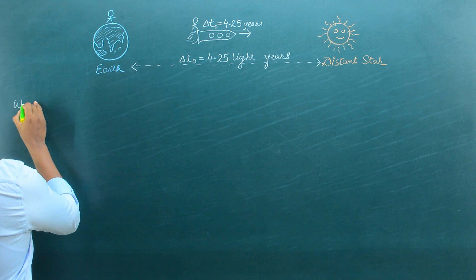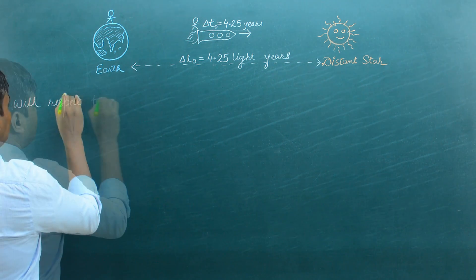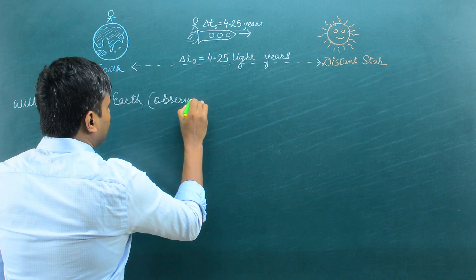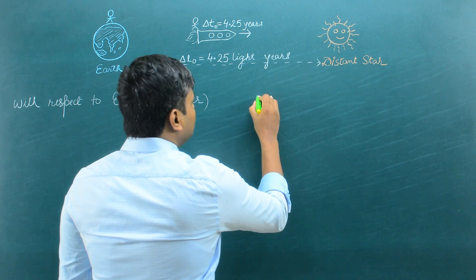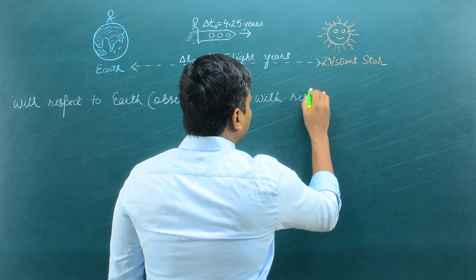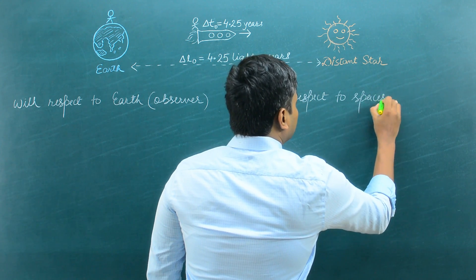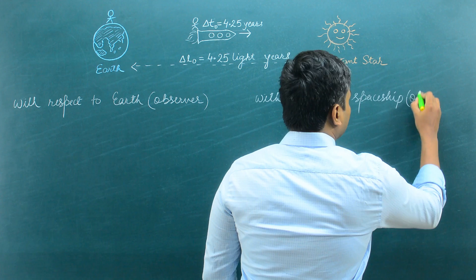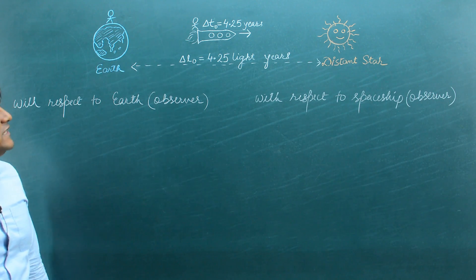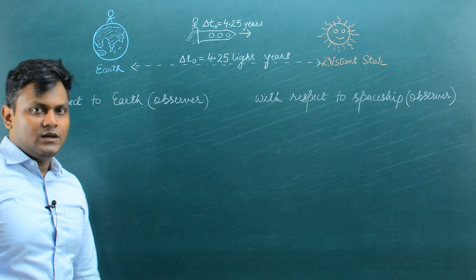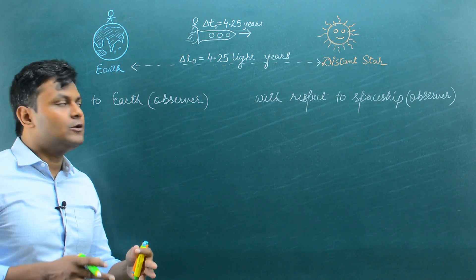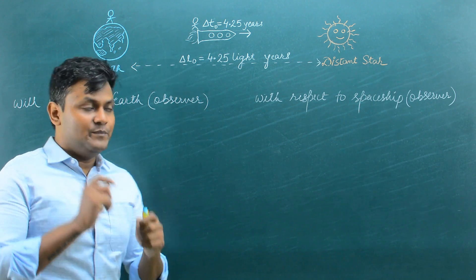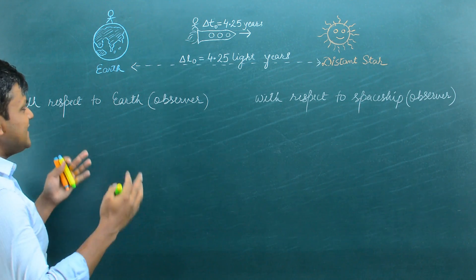Let us first look at the calculations with respect to Earth — by Earth I mean an observer on Earth. Similarly, on the right-hand side, I'm going to do the calculations with respect to the spaceship — meaning some kind of observer or measuring device on the spaceship. To calculate speed, what do we need? We need distance versus time. So let us look at what both observers know.